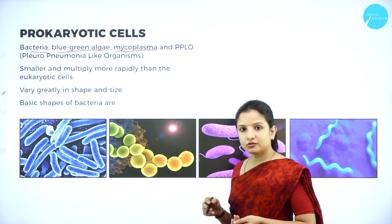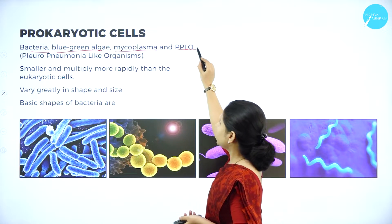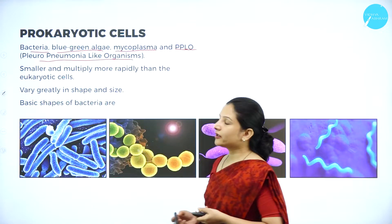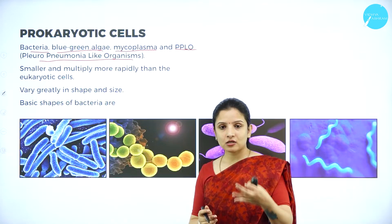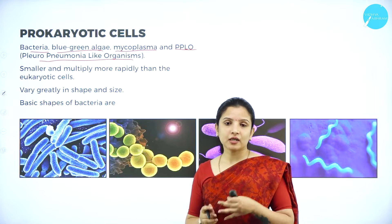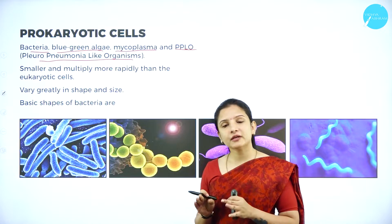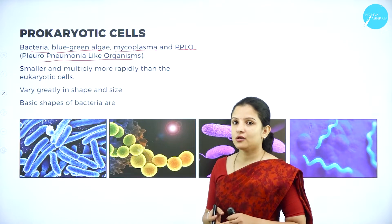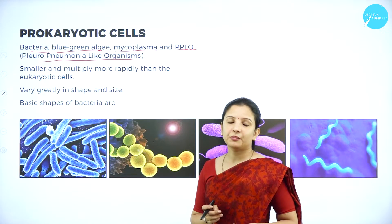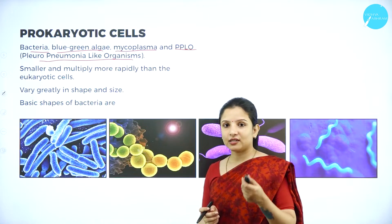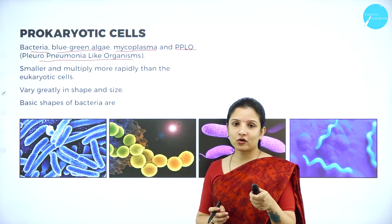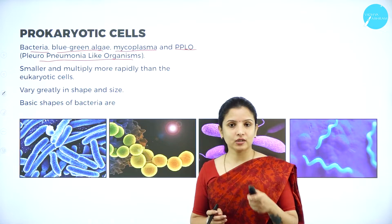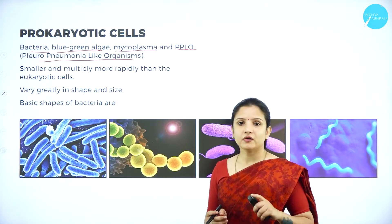Mycoplasma is also a species of bacteria, and so is PPLO — the pleuro-pneumonia like organism. Pleuro-pneumonia like organisms were earlier called mycoplasma, but after further investigations they were found to be somewhat different and were named separately. Almost all bacteria come under prokaryotic cells and are unicellular. What it means by prokaryotic is that they do not have a true nucleus — the genetic material is not covered by any nuclear membrane.